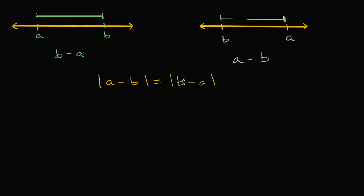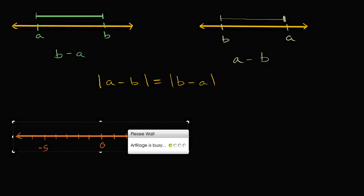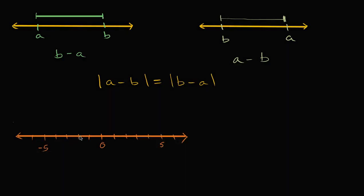Let's get a number line out and look at some examples. Let's say we want to figure out the distance between negative two and positive three. We can look at the number line and figure out what that distance is. To go from negative two to positive three, or the distance between them, we see it is one, two, three, four, five. This distance right over here is equal to five. Or you'd have to go five backwards to go from three to negative two.